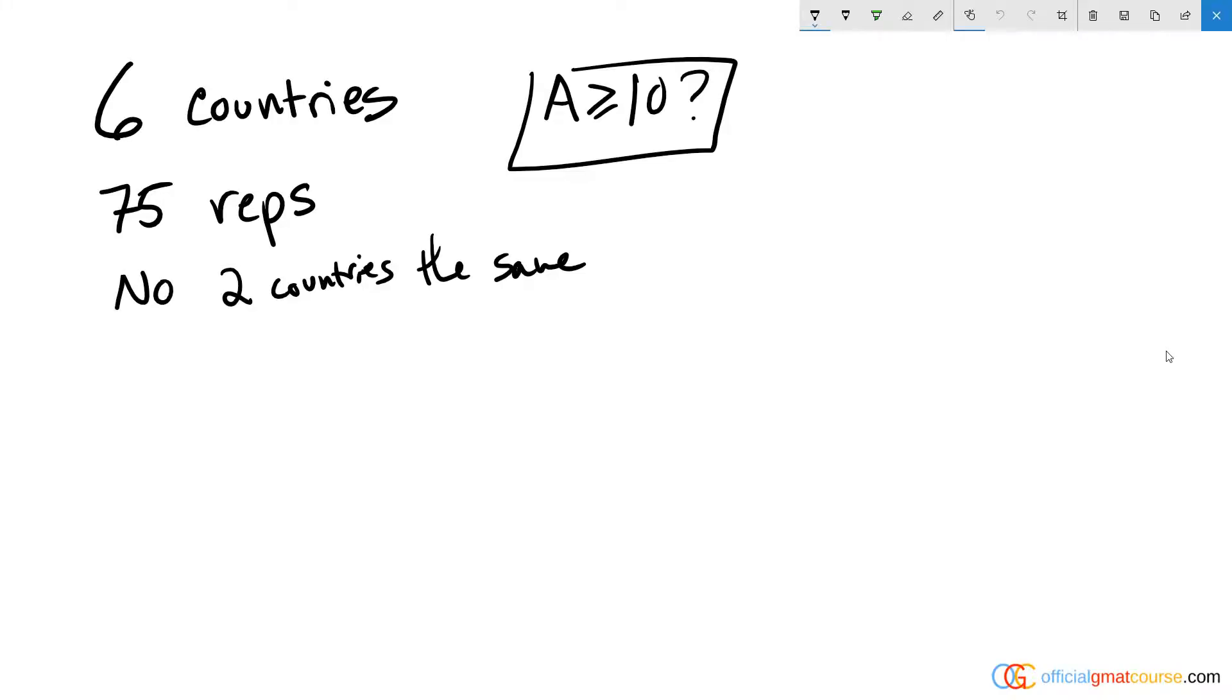We are dealing with the idea of minimize versus maximize here to test what the constraints are on our data sufficiency question. Basically, it's like finding the limits of how big or how small we could make the A country in terms of how many representatives it sends.